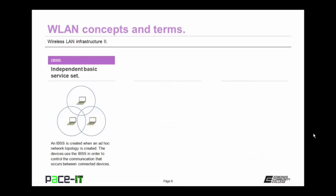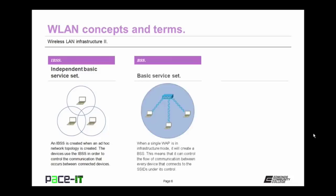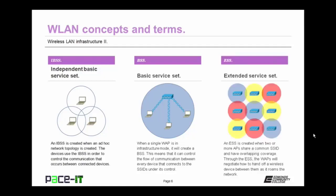Now let's move on to wireless LAN concepts and terms. First up is the IBSS, or Independent Basic Service Set. An IBSS is created when an ad hoc network topology is created. The devices use the IBSS to control the communication that occurs between the connected devices. Then there's the BSS, or Basic Service Set. When a single wireless access point is in infrastructure mode, it will create a BSS, controlling the flow of communication between every device that connects to the SSIDs under its control.